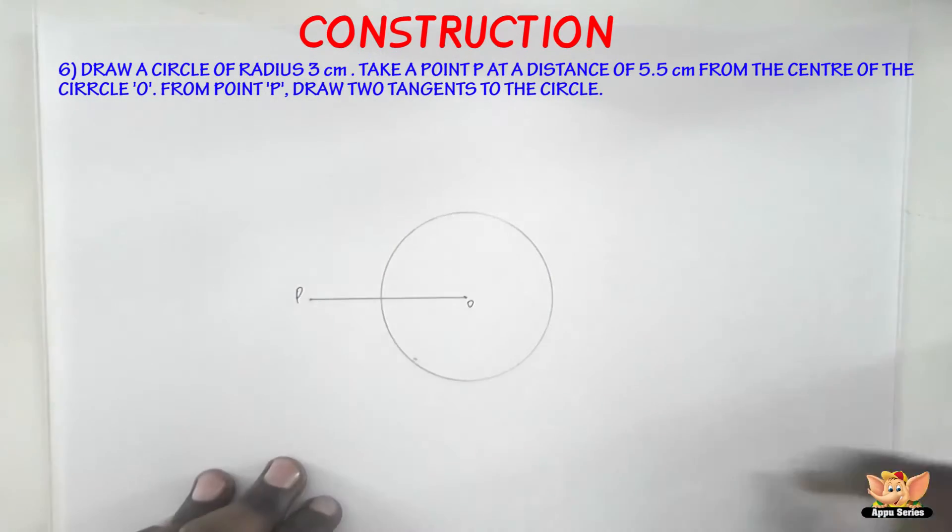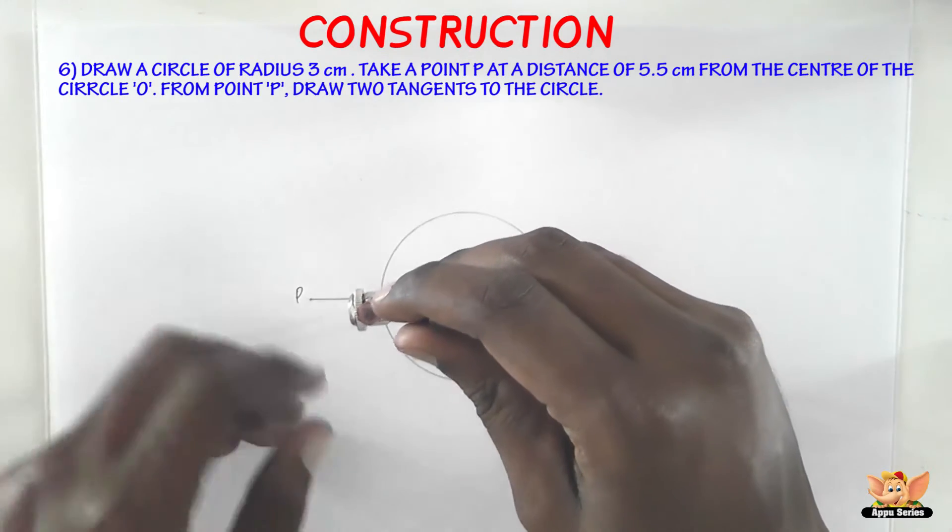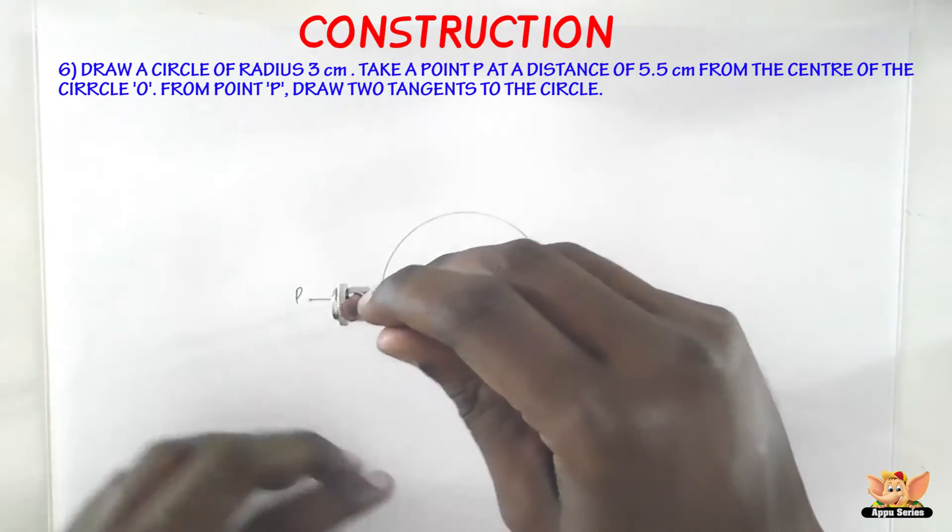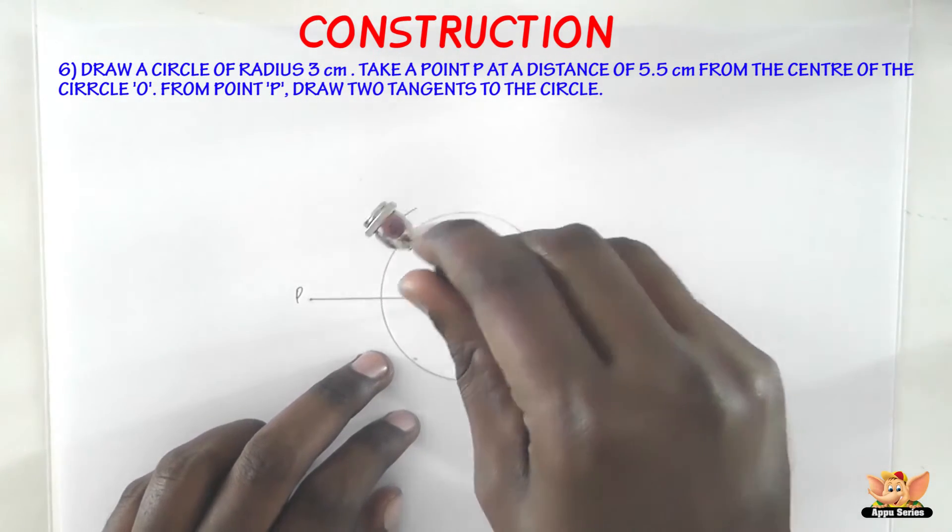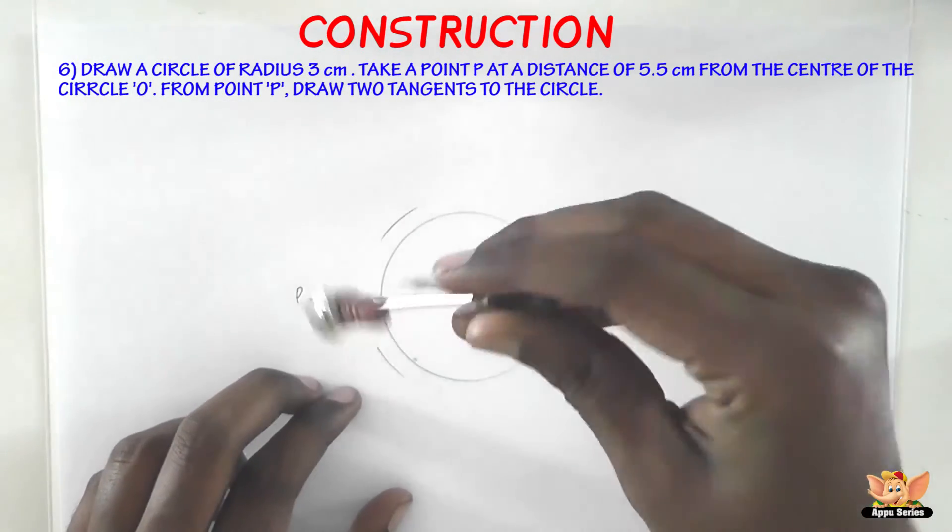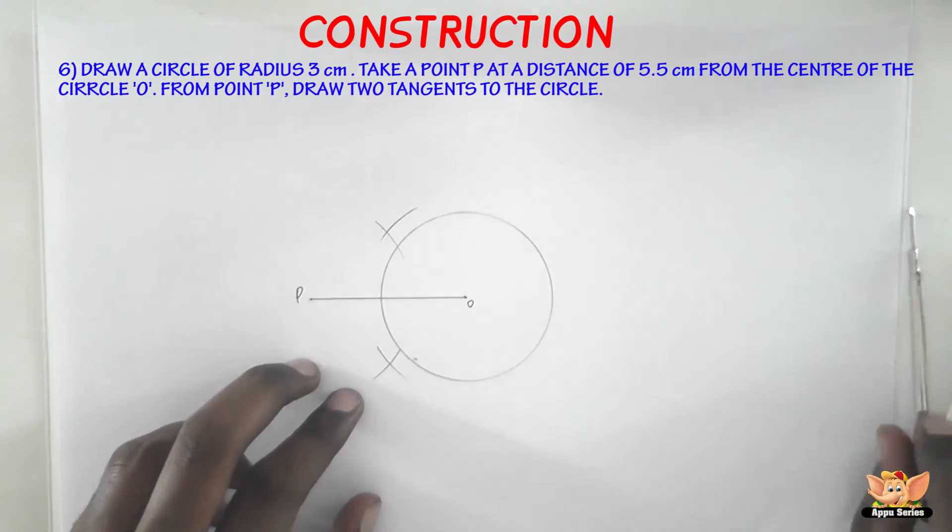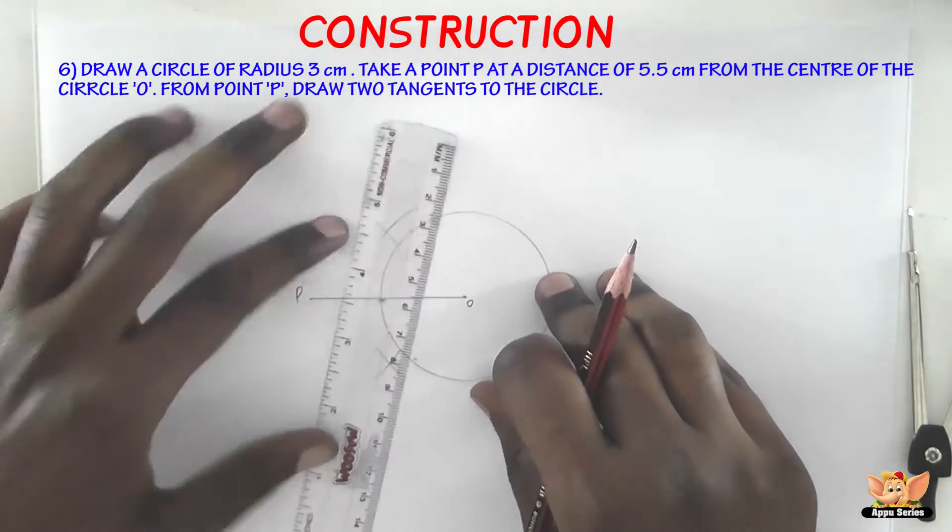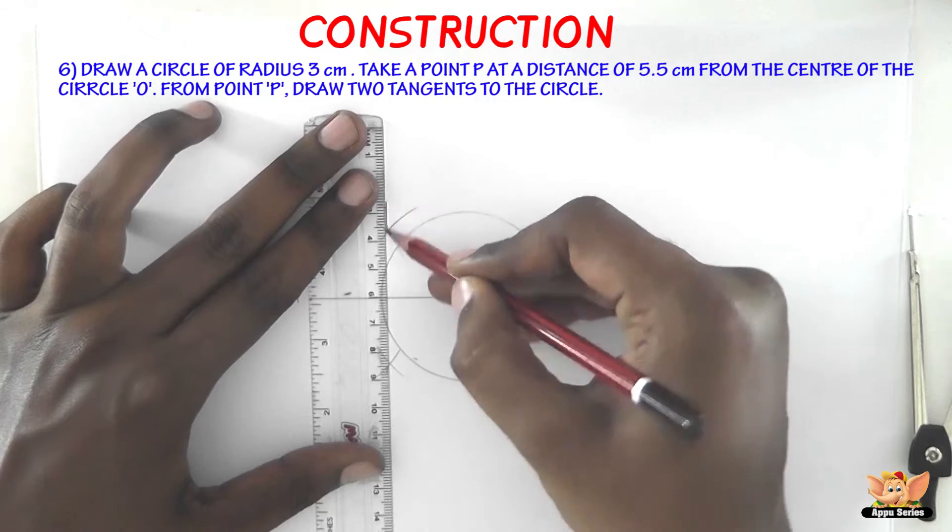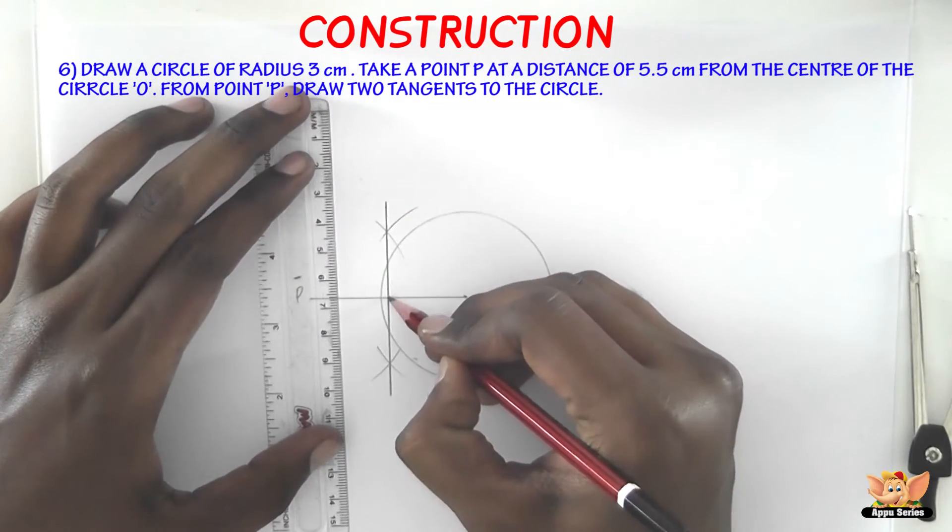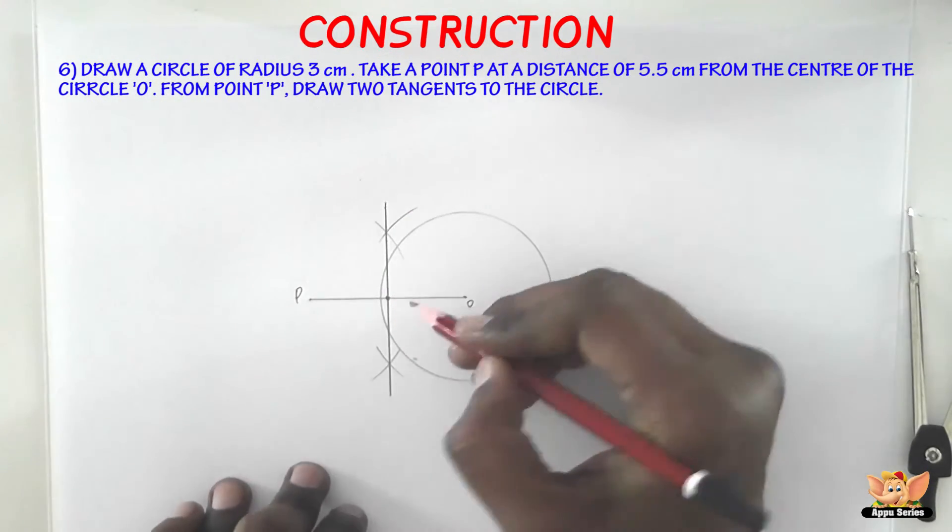Next step is to draw the perpendicular bisector of the line OP. So keep the compass at O taking it as center and the radius more than half of OP. Draw the arcs on either side of OP. Similarly keep it at P and cut those arcs drawn. So now join these points that we've got now. By joining these points it's going to intersect the line OP at Q.